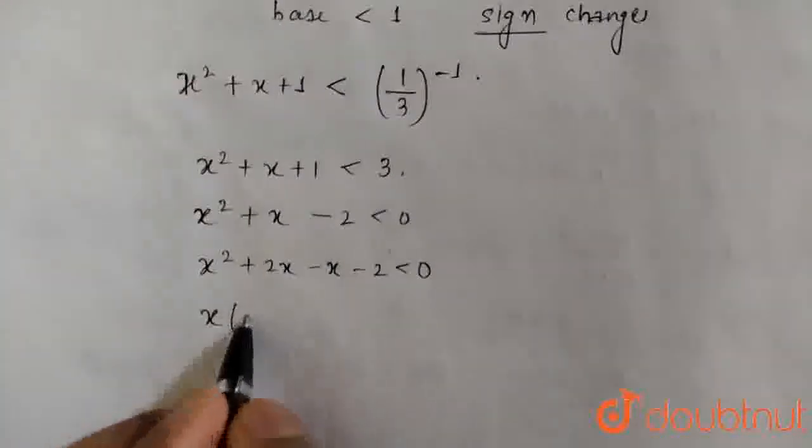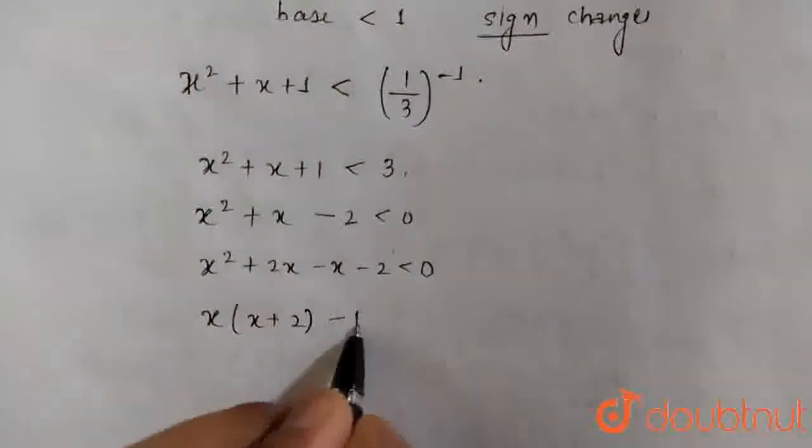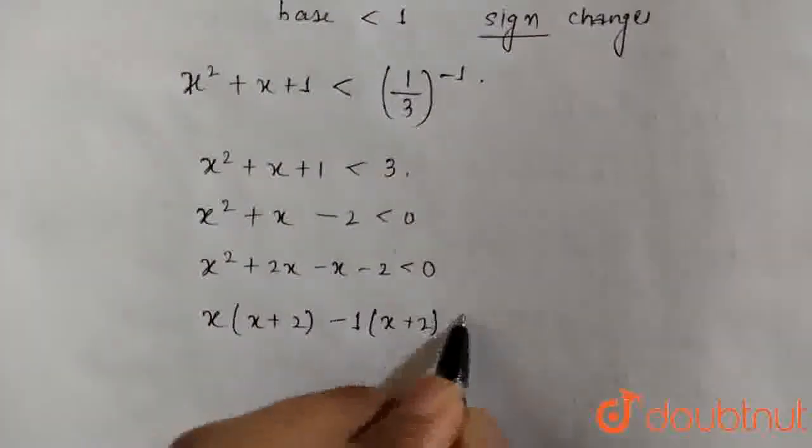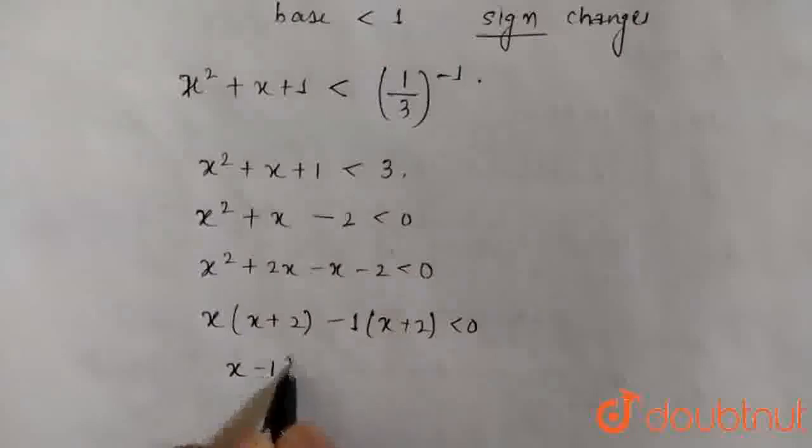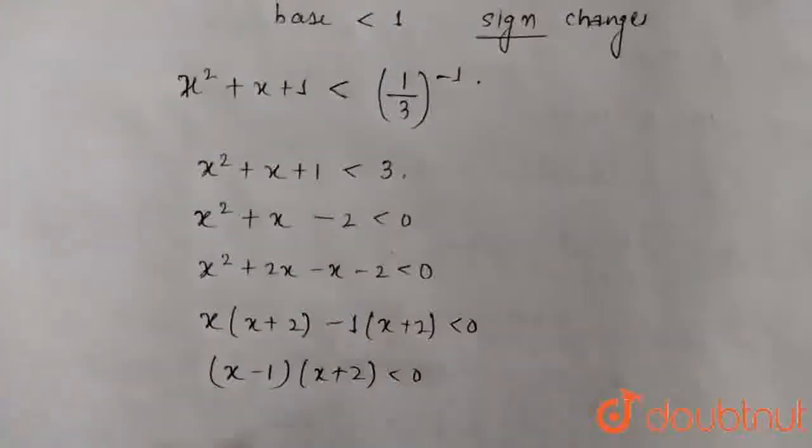Finally factorizing it, x(x + 2) - 1(x + 2) less than 0. Or (x - 1)(x + 2) less than 0.